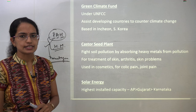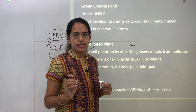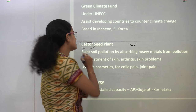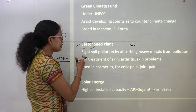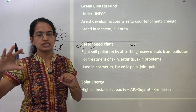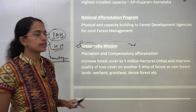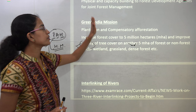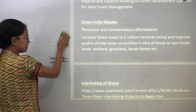The next important crop is castor. Castor has the unique capability to fix or absorb heavy metals, thereby decreasing soil pollution caused by heavy metals. It has numerous uses: skin treatment, problems of erythritis, joint pain, colic pain, and use in cosmetics. Along railways where heavy metals are more prevalent, castor seeds are being planted. The National Afforestation Program is again very important. The Green India Mission talks about increasing forest cover by 5 million hectares, and in another 5 million hectares, we aim to improve the quality of tree cover.